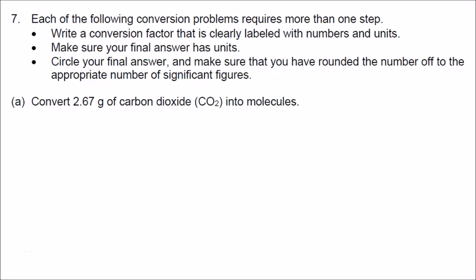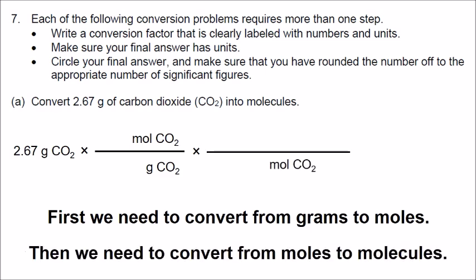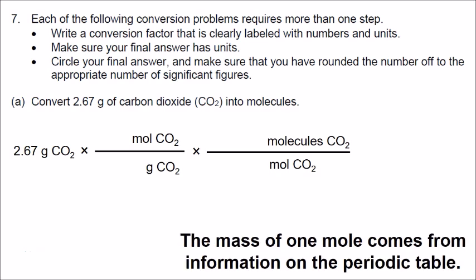In number 7, each of the following conversion problems involves 2 steps, because we're going to start with grams of carbon dioxide and convert all the way to molecules. Let's be very clear with our units. We have 2.67 grams of carbon dioxide. In our first conversion factor, we put grams of carbon dioxide on the bottom and moles of carbon dioxide on the top. In our second step, we put moles of carbon dioxide on the bottom and molecules of carbon dioxide on the top.